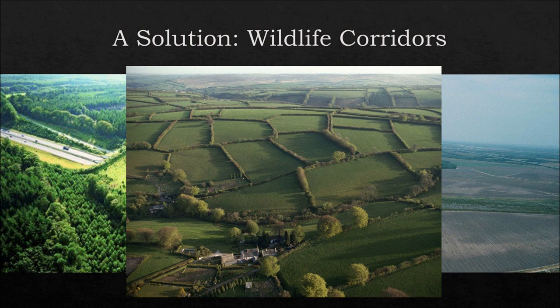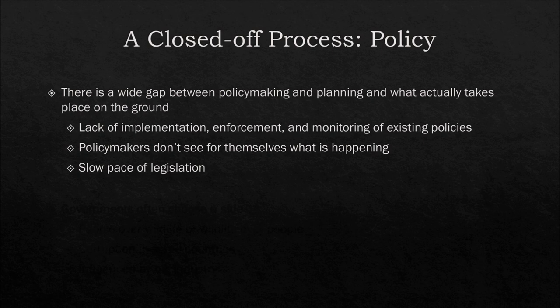Another issue when it comes to human wildlife conflicts in agriculture is policy, which is often a closed-off process. There is a wide gap between policy making and planning and what actually takes place on the ground. This could be a lack of implementation by farmers or companies, or a lack of enforcement and monitoring of existing policies by officials. Policy makers don't really see for themselves what is happening — they're not down in the field personally experiencing this conflict. There's also the slow pace of legislation, where an issue could intensify or completely change before it is formally addressed.